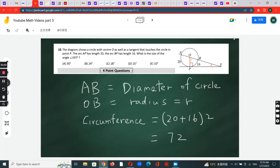It's simply the sum of these two times 2. The circumference is 20 plus 16 times 2, which equals 36 times 2, which is 72. So 72 is the entire circumference of the circle.